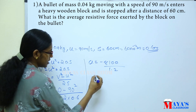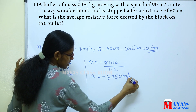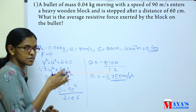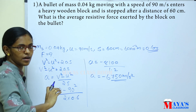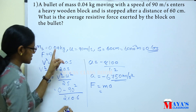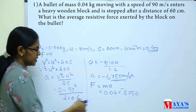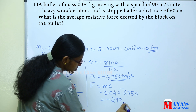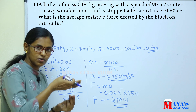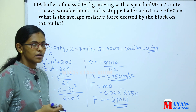The acceleration works out to −6750 m/s². The resistive force is F = mass × acceleration = 0.04 × (−6750) = −270 N. The resistive force is negative, meaning it opposes the motion, and its magnitude is 270 N.